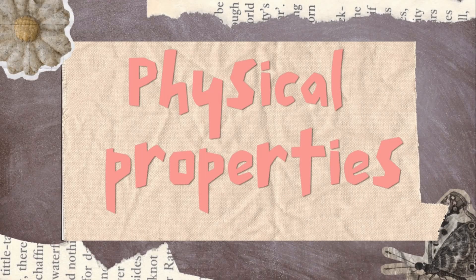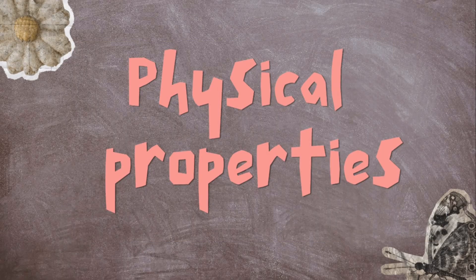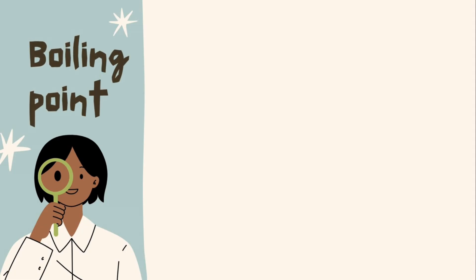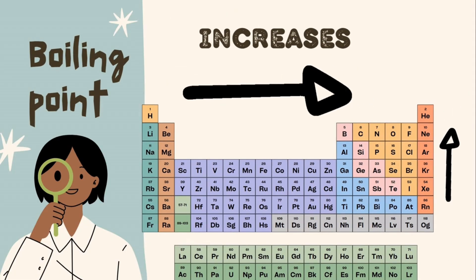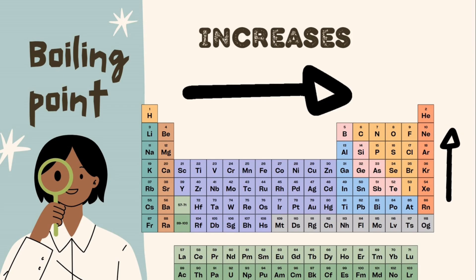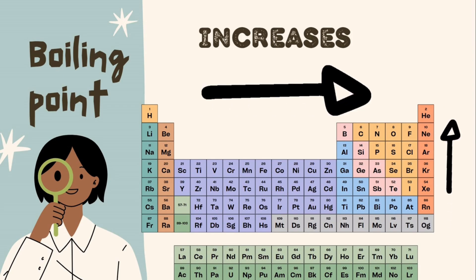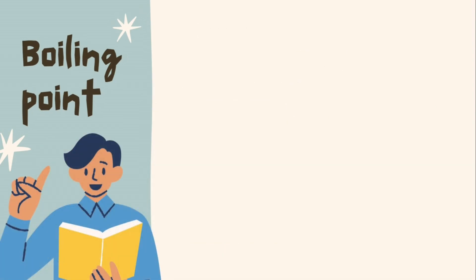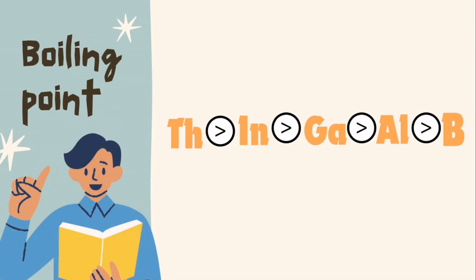Let us see the physical properties of this group. The first one is the boiling point. The trend follows the periodic table trend, and that is why the boiling point goes on increasing as we move down the group, as shown here.